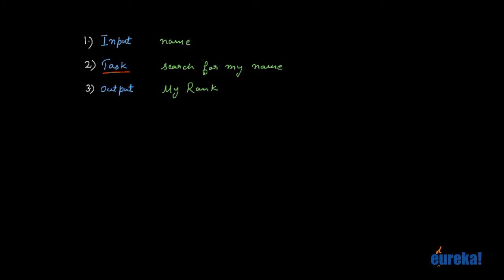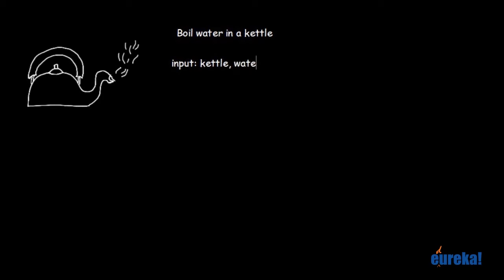To get the concept of algorithms more clear, let's try a few more examples. The next example is to tell a friend how to boil water in a kettle. Before writing the algorithm, we first need to figure out three things. The input is the kettle itself and water. The task has two parts: filling up the kettle with water, and boiling the water. And finally, the output is boiled water.